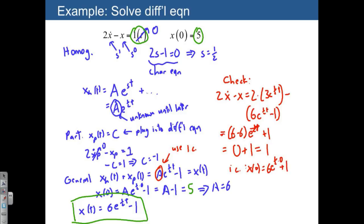So let's plug in x of 0 is equal to 6 e to the 1 half times 0 minus 1. And of course, when you plug in t equals 0, you end up with 5, meaning that we did satisfy our initial conditions.